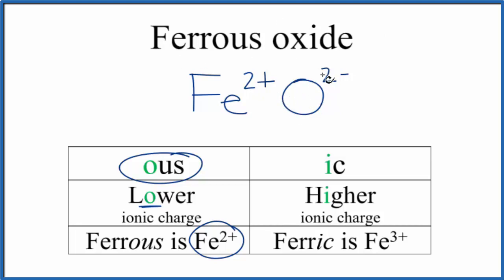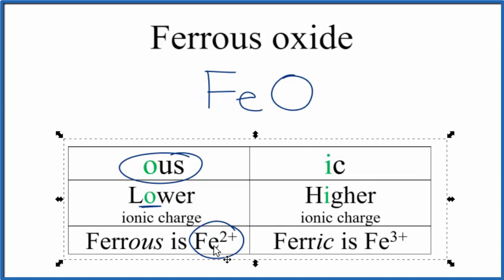So the formula for ferrous oxide is just FeO. If we were to write the name with the newer naming system, we would call this iron(II) oxide, but with the old system it's ferrous oxide.